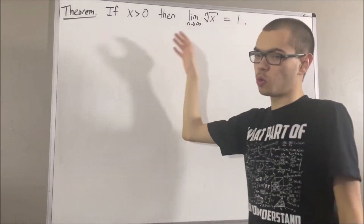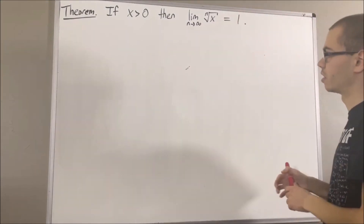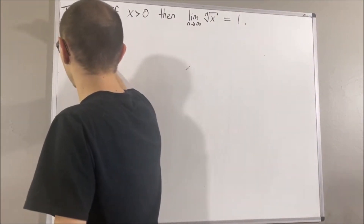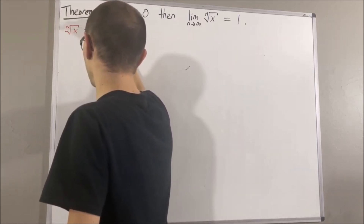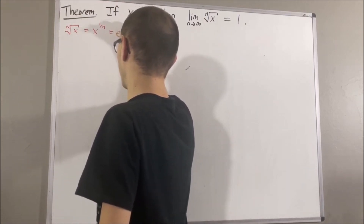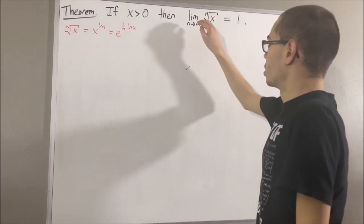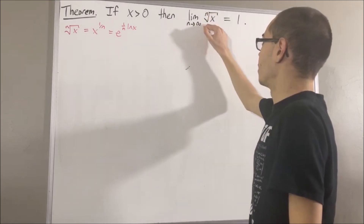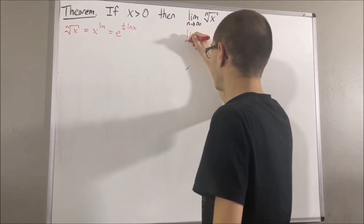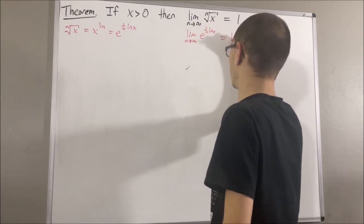Now in proving this theorem, we are going to use the exponential function and real number exponents. We know that the n-th root of x is equal to x to the 1 over n, which is equal to e to the (1 over n) times the natural log of x. So really, to show that the limit of the n-th root of x is equal to 1, this is the same thing as showing the limit of e to the (1 over n) natural log of x is equal to 1.